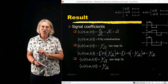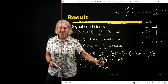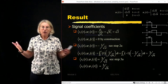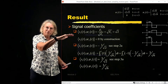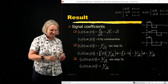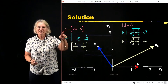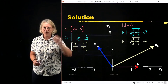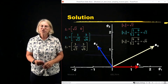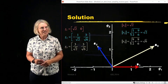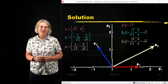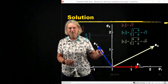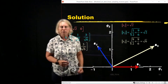Therefore, the coefficients for the second symbol are minus one over root 2 and 3 over root 6. For the third symbol, we already calculated its projections onto both basis vectors, so we already have those coordinates: 3 over root 2 and 3 over root 6. Now we have the vector coordinates for each symbol: S1 is (root 2, 0), S2 is (minus one over root 2, 3 over root 6), and S3 is (3 over root 2, 3 over root 6). We can plot them in signal space.